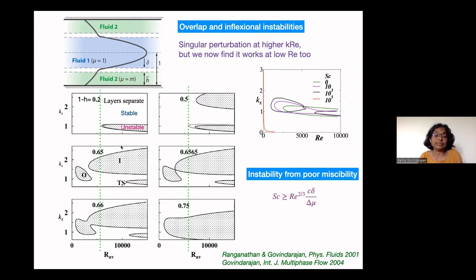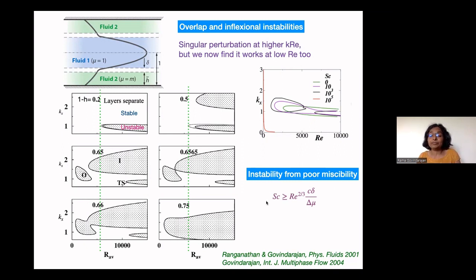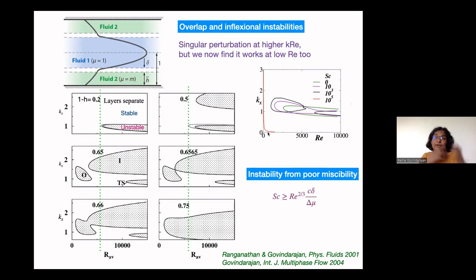Alongside the new overlap instability and the standard inflectional instability from Rayleigh and Fjortoft, as the parameter changes these instabilities can merge into one single patch. There is yet another instability coming from miscibility, which appears when the Schmidt number crosses a certain threshold — giving extremely low Reynolds number instability, as seen in the summary plot.